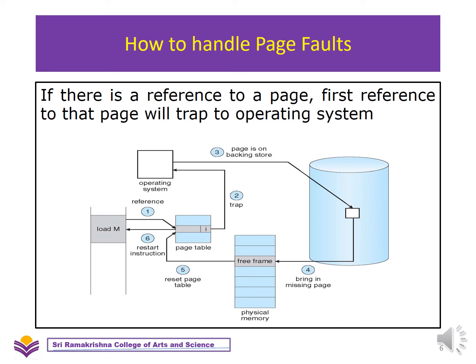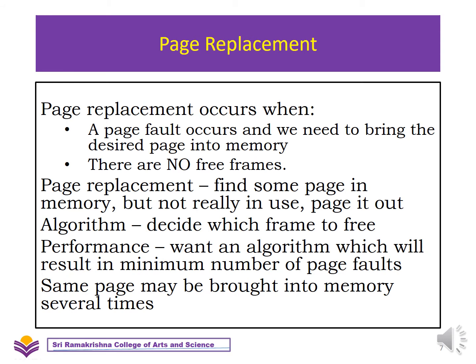What is a page fault? If a particular page is not available in memory and that page is needed for further execution, we immediately give a trap to the operating system stating that the page is not available — that is what is known as a page fault. In page replacement, the page fault is trapped, the operating system searches for that page in the backing store. If the page is available, it searches for a free frame and puts that page onto the free frame.